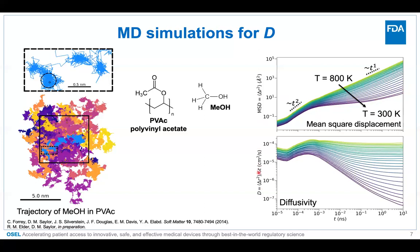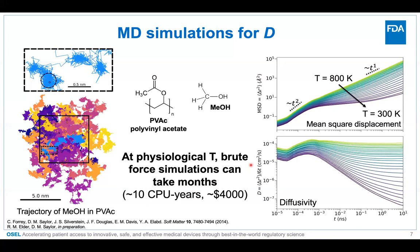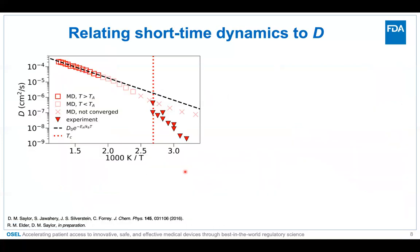We can take the mean squared displacement and divide by time to get diffusivity over time. At very high temperatures it fairly rapidly reaches a constant value — this is the diffusivity of methanol in polyvinyl acetate at those temperatures. But at lower temperatures, the lines have not yet converged on the timescale of these 10-nanosecond simulations. That's a problem because physiological temperature is actually what we're interested in. These simulations can take months, the same order of magnitude as the experiments, so we'd like to find shortcuts to get the diffusivity at physiological temperature.